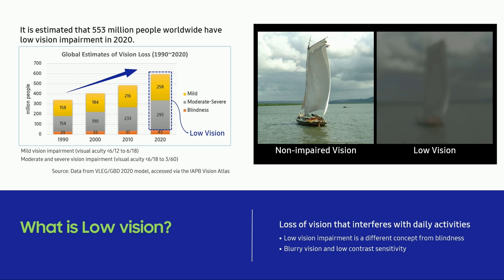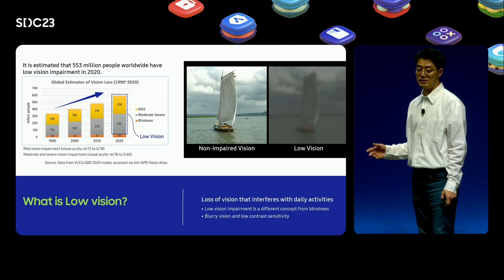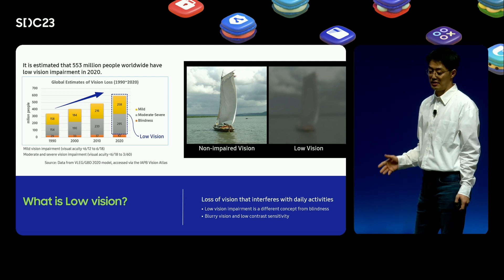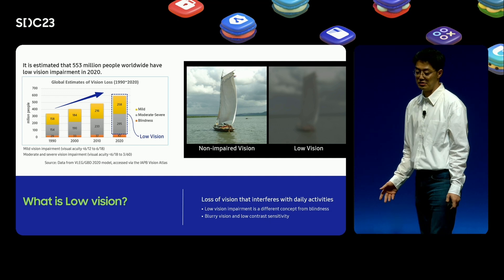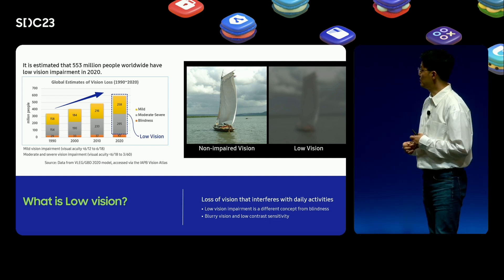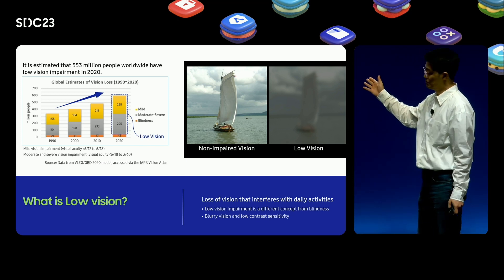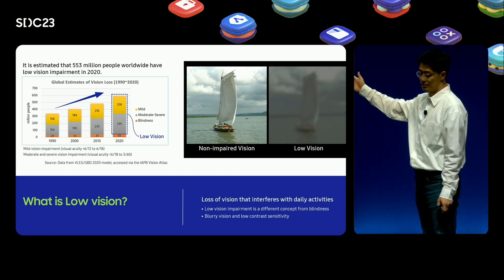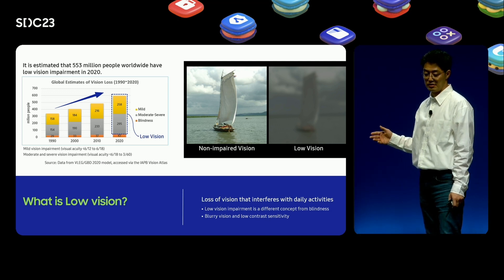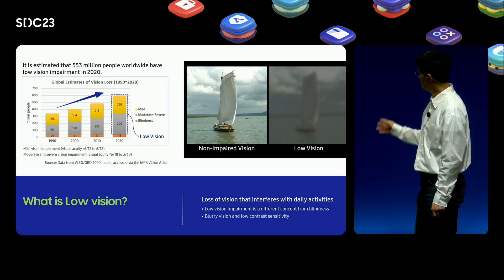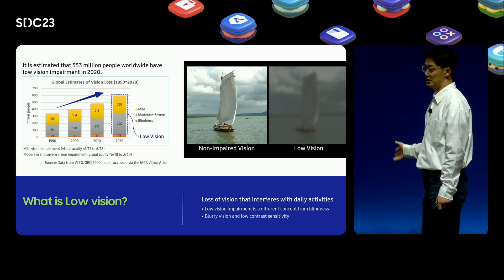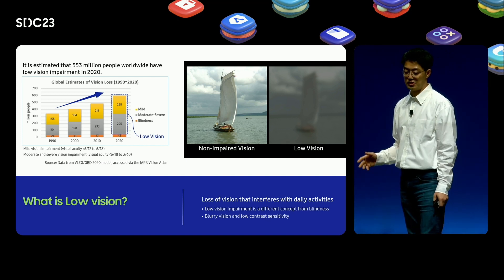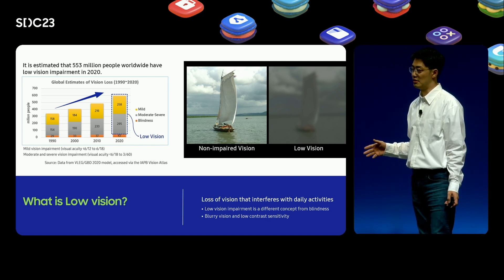Low vision impairment is a different concept from blindness, which is the inability to perceive light. Many people with low vision have blurry vision and low contrast sensitivity, which makes images appear blurry and details in objects difficult to see. The example picture shows how a person with low vision sees an object. The picture on the left is seen by people with non-impaired vision, and the picture on the right is seen by people with low vision. Of course, this is just one example, as the visual characteristics of people with low vision vary greatly from person to person.